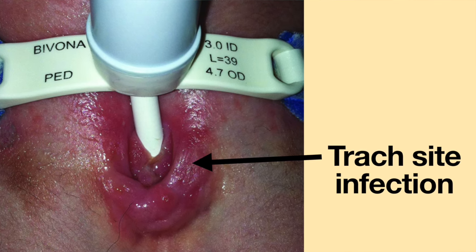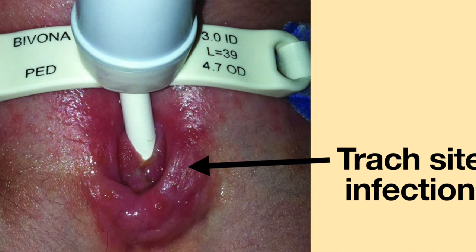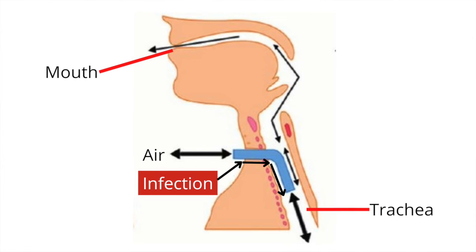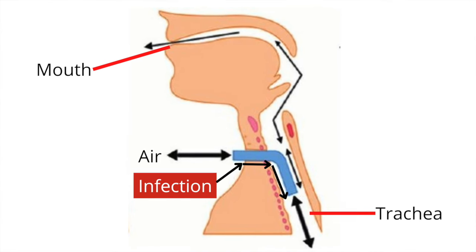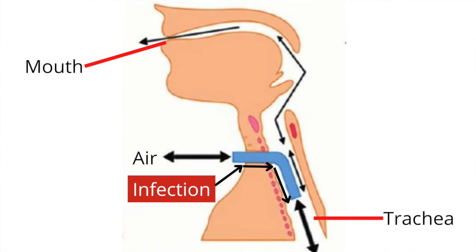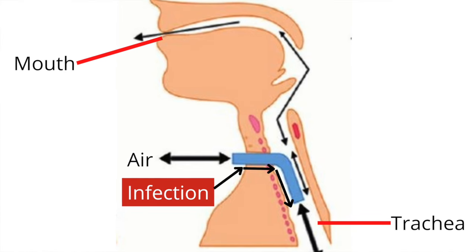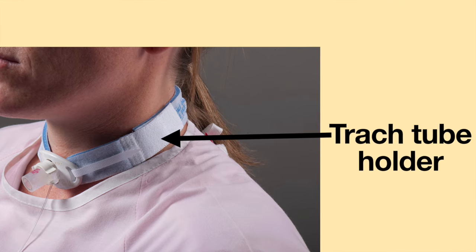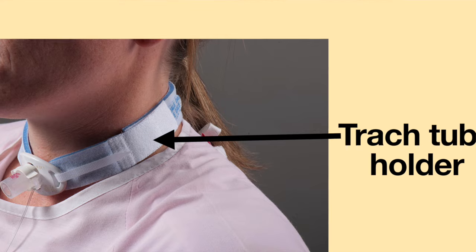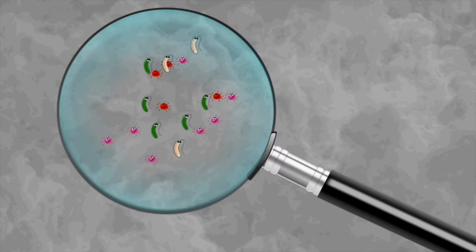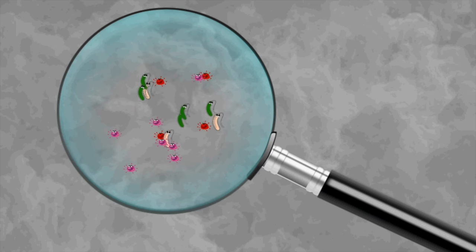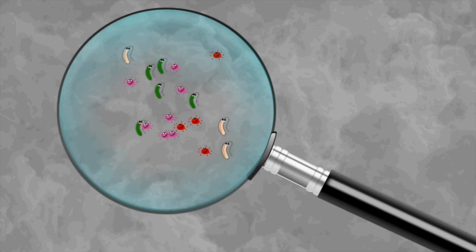Tracheitis can also occur when the tracheostomy site becomes infected. The skin infection can migrate into the airways from the natural movement of the tracheostomy tube in and out of the trachea. Although the tracheostomy tube holder keeps the tube secure, it still moves when you swallow, speak, sneeze, cough, etc. Movement of the tracheostomy tube can allow bacteria on the skin to enter the trachea.